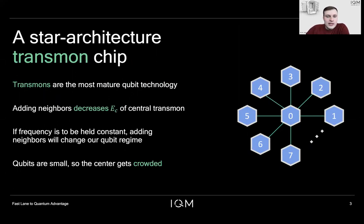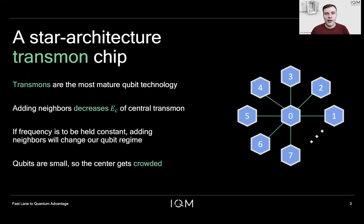If we want to keep the qubit frequency constant, we need to compensate by increasing the Josephson energy, EJ. By doing that, we make the qubit less and less anharmonic. So we move away from the transmon regime and, in the limit of large N, we will end up with a harmonic oscillator with a SQUID loop. Furthermore, qubits are small, so the center tends to get quite crowded if you want to couple many qubits there, which increases the risk of unwanted couplings and crosstalk errors.